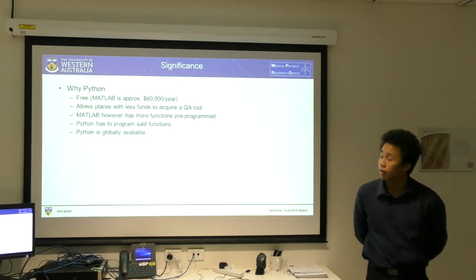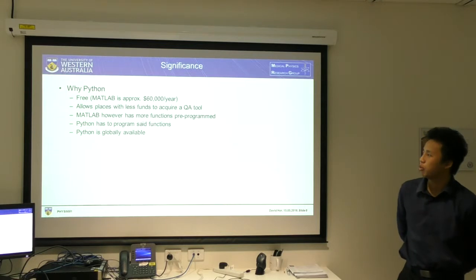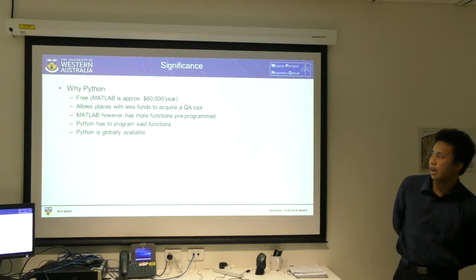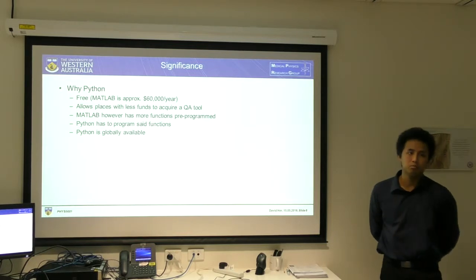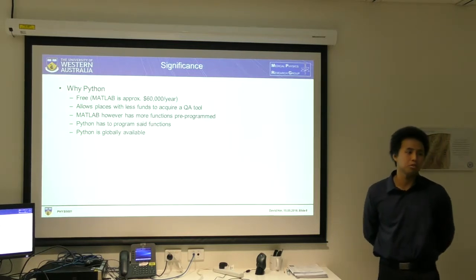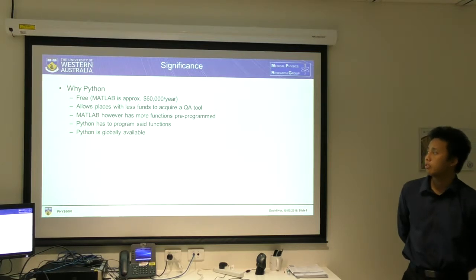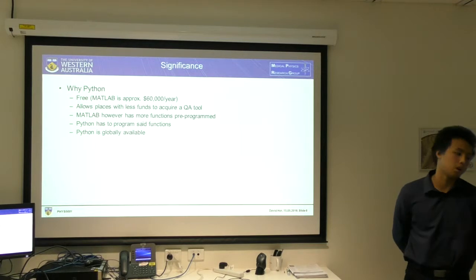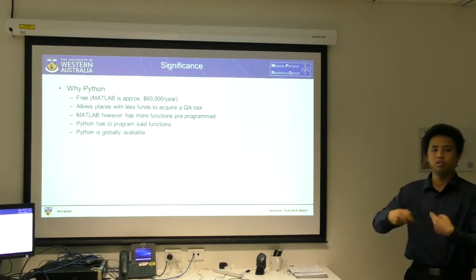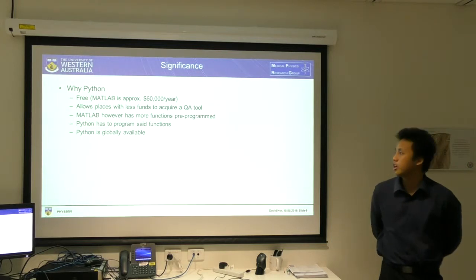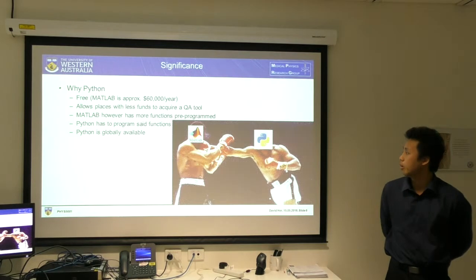Now why Python? It's free — free versus 60,000 dollars. That doesn't need much more explanation. It allows places with less funding to acquire a quality assurance tool. Python also has a lot more functions that are pre-programmed in, so you don't have to program them manually, and Python is globally available.